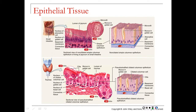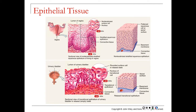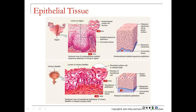Stratified squamous epithelium, like the inner lining of the cheeks or the mucous membrane of the vagina, consists of many cell layers of flattened cells. The bottom cells may look more cuboidal, but it's still called squamous because the top layers are flat. Transitional epithelium in the bladder appears puffy and rounded when the bladder is empty, but flattens to a squamous state when the bladder fills.